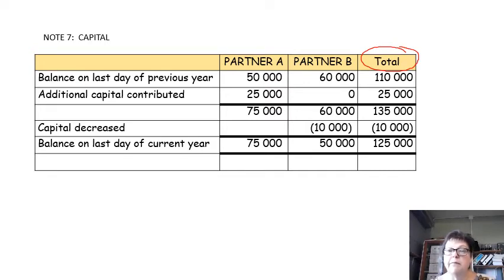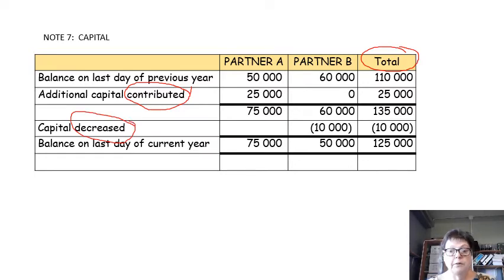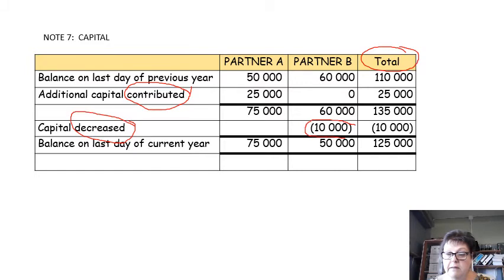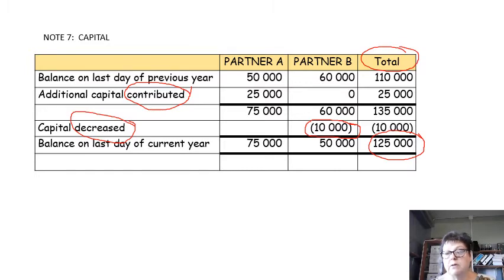You will have to read in your adjustments. If there was anything that you had to subtract from the opening balances, then what can happen with capital this year is that the partner can either contribute or withdraw capital. If he contributes, you write the amount he has contributed in his column, then you get your total contribution for this year. If the capital is decreased, the amount of that decrease must be in brackets. You write in the total column and then do your calculations again.